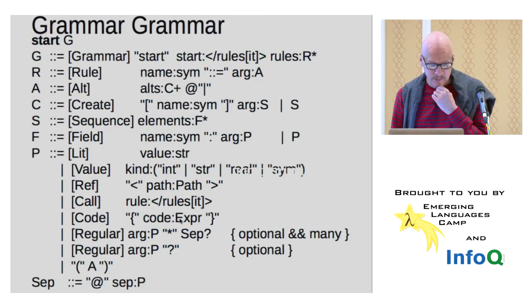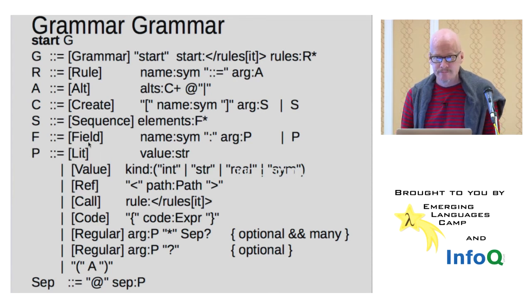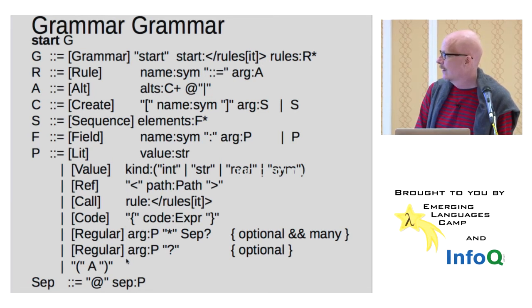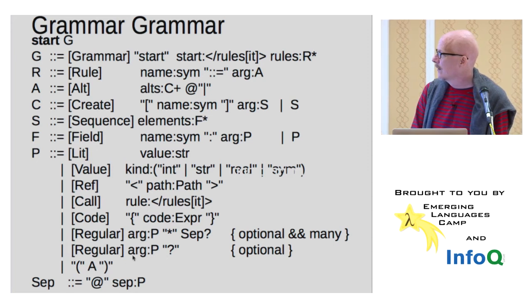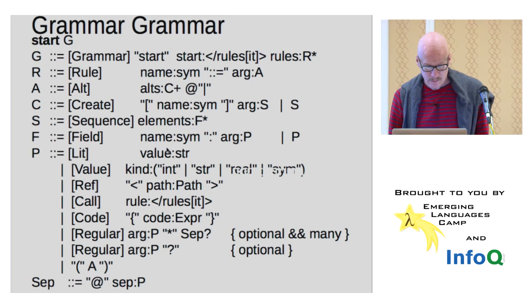I don't want to go through this too much, but I do want to mention that this is our grammar of grammars. So grammars are describable as grammars, obviously. And they have rules, they have alternatives, they have sequences, field names, references, call code. And so just so we know that we can do that.